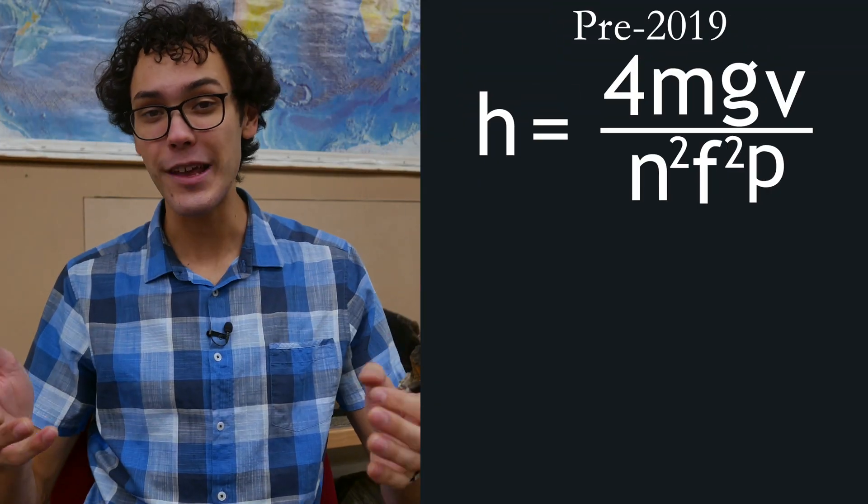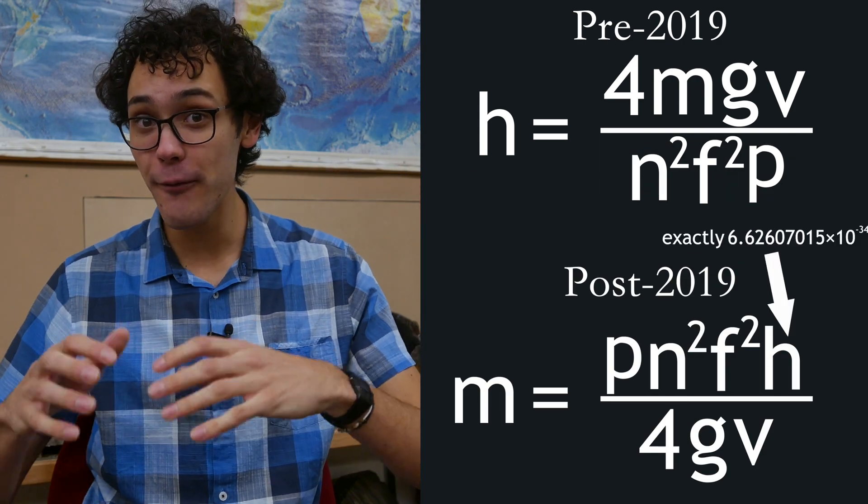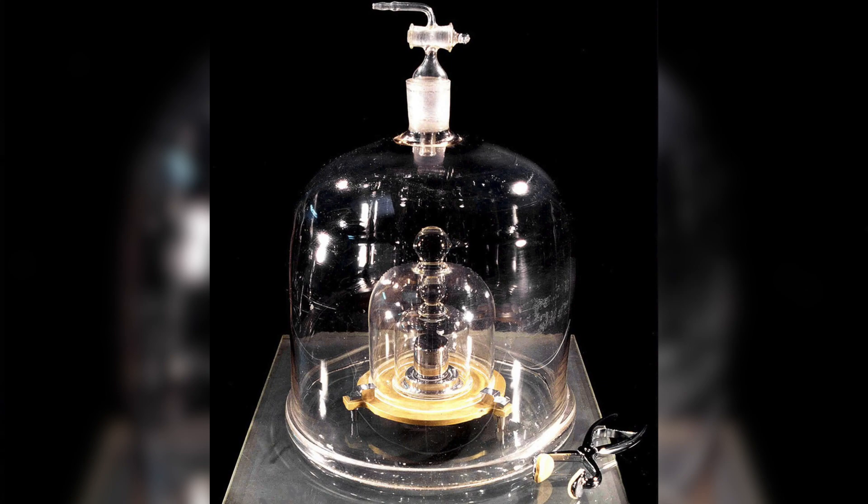post-2019, we use that fixed constant to define mass, moving the definition off a physical object locked in a basement under three bell jars in Paris to a fundamental universal constant, all made possible by the Kibble balance.